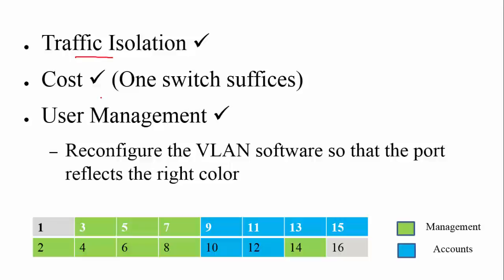This solves the earlier issues. First, traffic isolation: broadcast traffic is sent only to nodes in the same group. Second, cost: instead of many switches, we use just one switch to connect all users. Third, user management is easy — if an employee moves from accounts to management, you simply reconfigure the VLAN software to change that port's color from blue to green. It's a nifty idea, but there is still an issue.